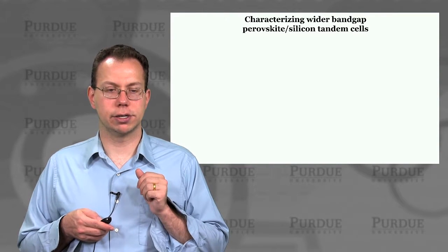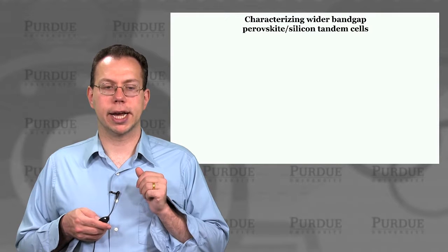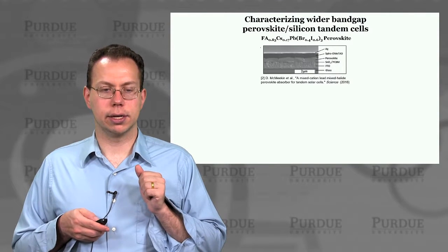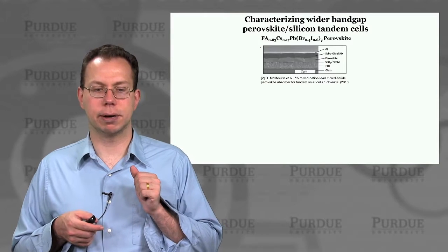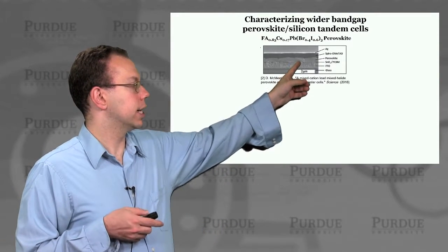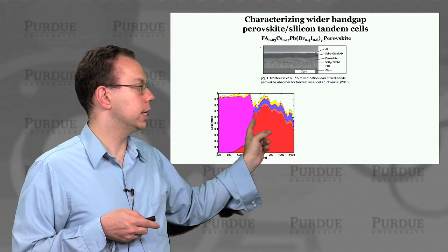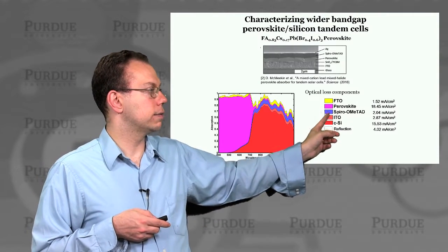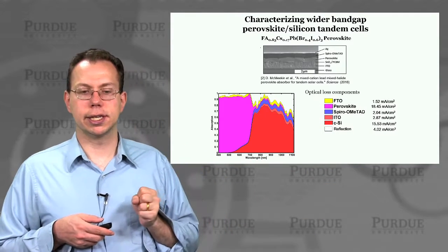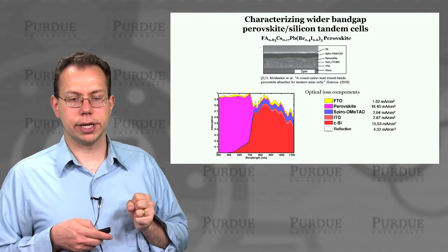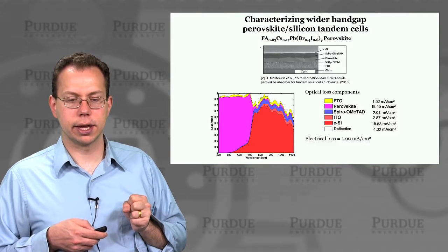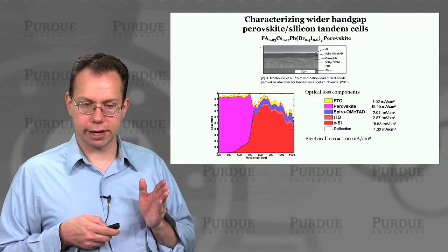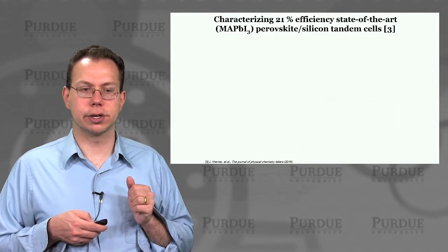We still have significant charge transport loss. To characterize the wider bandgap perovskite-silicon tandem cells as a potentially more stable alternative, we show the structure recently published in Science. We can calculate the absorption for both the perovskite and the silicon below it. The perovskite and silicon generate a fair amount of photocurrent, but there is a significant current mismatch — the perovskite has much more current than the crystalline silicon. Reflection is significant, and the ITO and FTO absorption are also major factors.